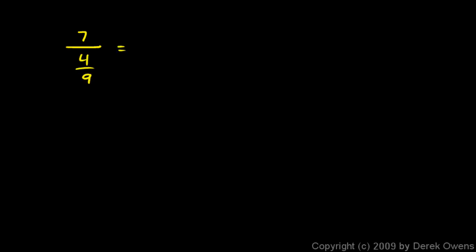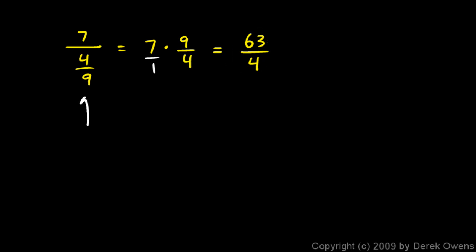Here are a couple of additional examples. What if I have 7 divided by 4 ninths? Dividing by 4 ninths is the same as multiplying by 9 fourths. So this is 7 times 9 over 4. Remember that 7 is the same as 7 over 1. Multiplying across: 7 times 9 is 63, and 1 times 4 is 4. So I have 63 over 4, and that doesn't simplify any further — but it's simpler than the original problem.